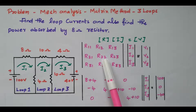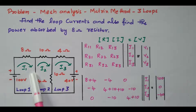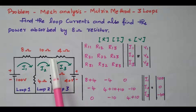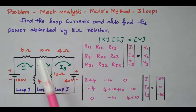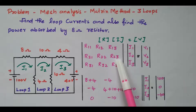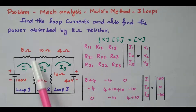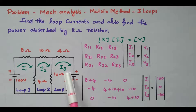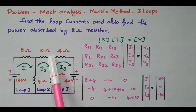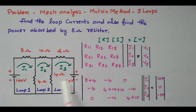R22 is the total resistance available in the second loop. In loop 2 we have a 4-ohm, a 10-ohm, and another 10-ohm resistor, so R22 = 4 + 10 + 10 = 24. What is R23? The resistors commonly available between the second and third loops — this 10-ohm is available in both the second and third loops, so R23 = −10.